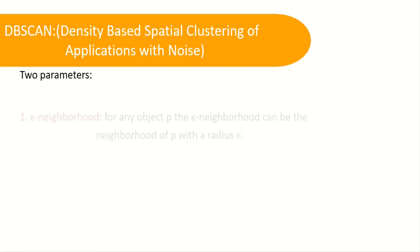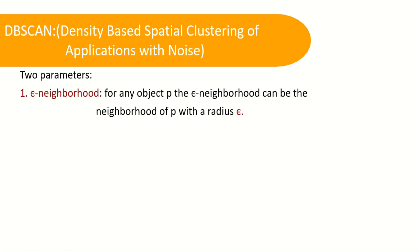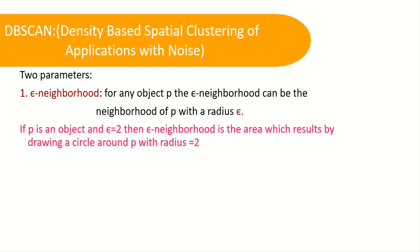It has two parameters. First is epsilon-neighborhood. For any object P, the epsilon-neighborhood can be the neighborhood of P with a radius epsilon, where P is an object. If P is an object and epsilon equals 2, then epsilon-neighborhood is the area which results by drawing a circle around P with radius equal to 2. Let's understand the same in a diagrammatic representation. P is our object and epsilon is the radius which equals 2, and epsilon-neighborhood is the area around P with radius equal to 2.